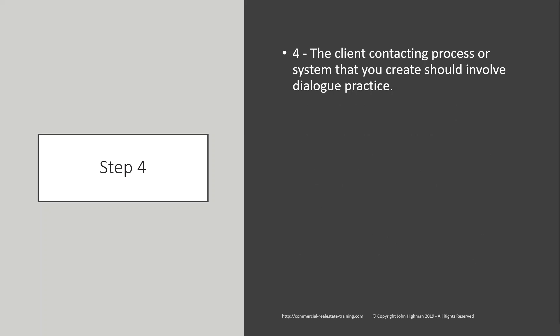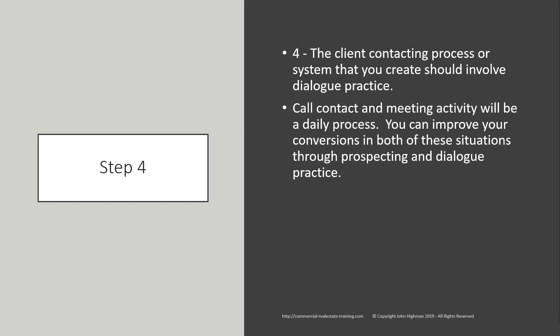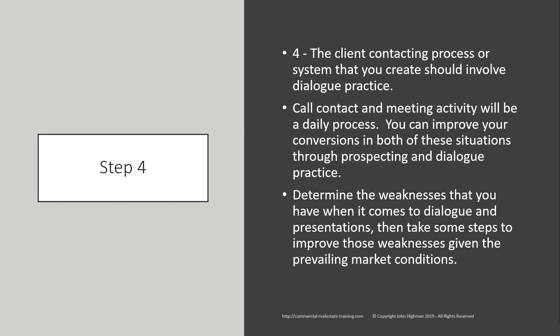Number four: the client contacting process or system that you create should involve dialogue practice. If you're going to connect with a lot of people, you should be good at your conversations across the telephone and in meetings. Call contact and meeting activity will be a daily process. You can improve your conversions through prospecting and dialogue practice — a daily event before you get to work. Determine the weaknesses you have when it comes to dialogue and presentations, then take steps to improve your voice, your connections, and how to address prevailing market conditions. Most agents don't do this, so that is an opportunity for you to improve your conversions to meetings and then to listings.